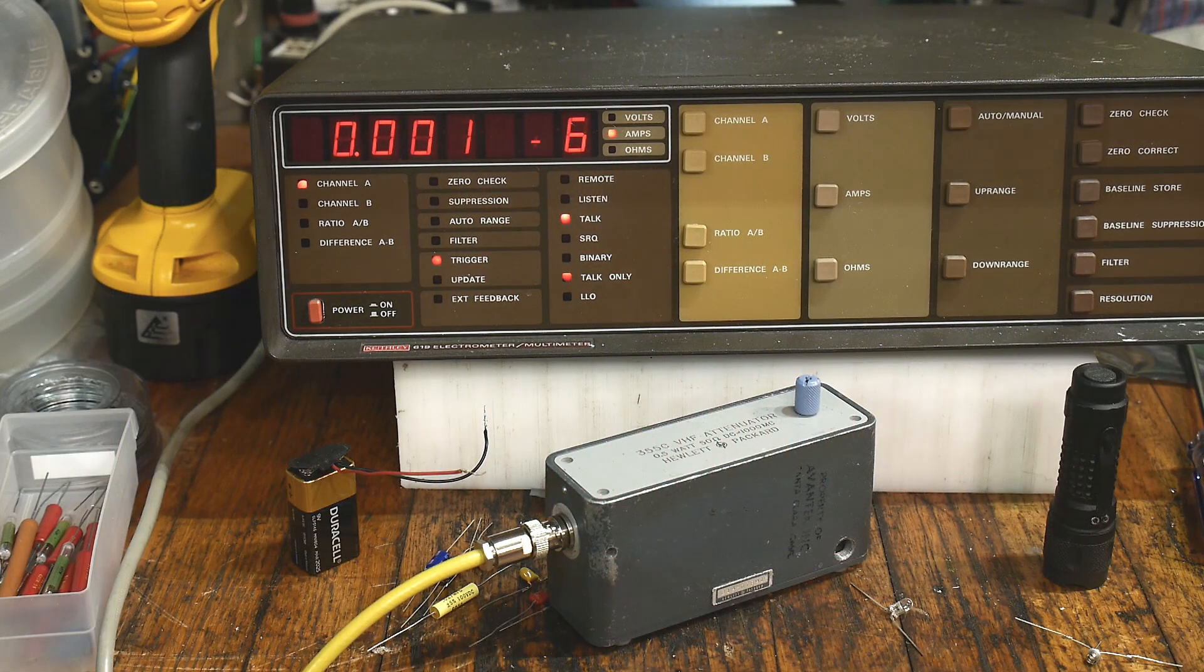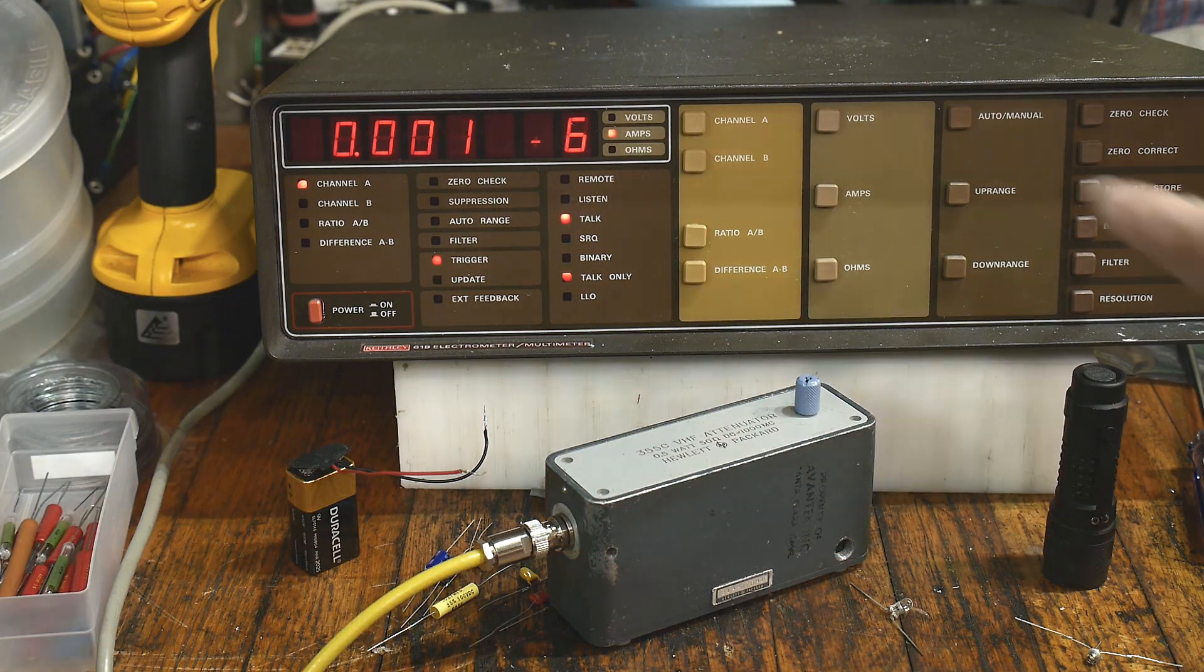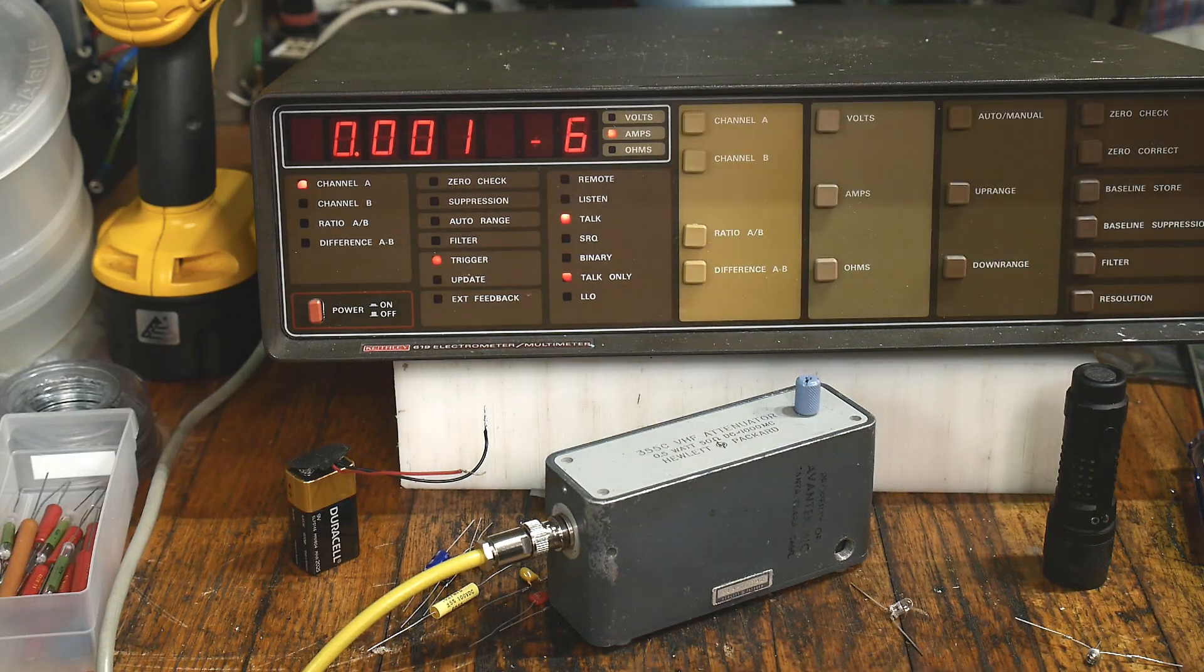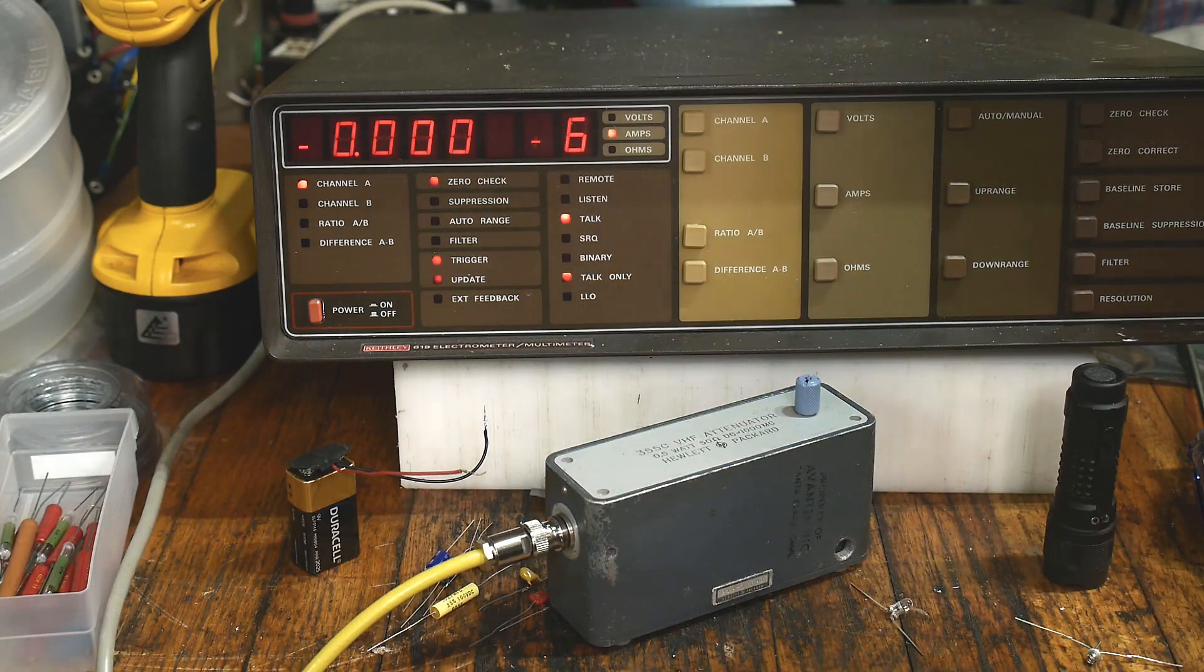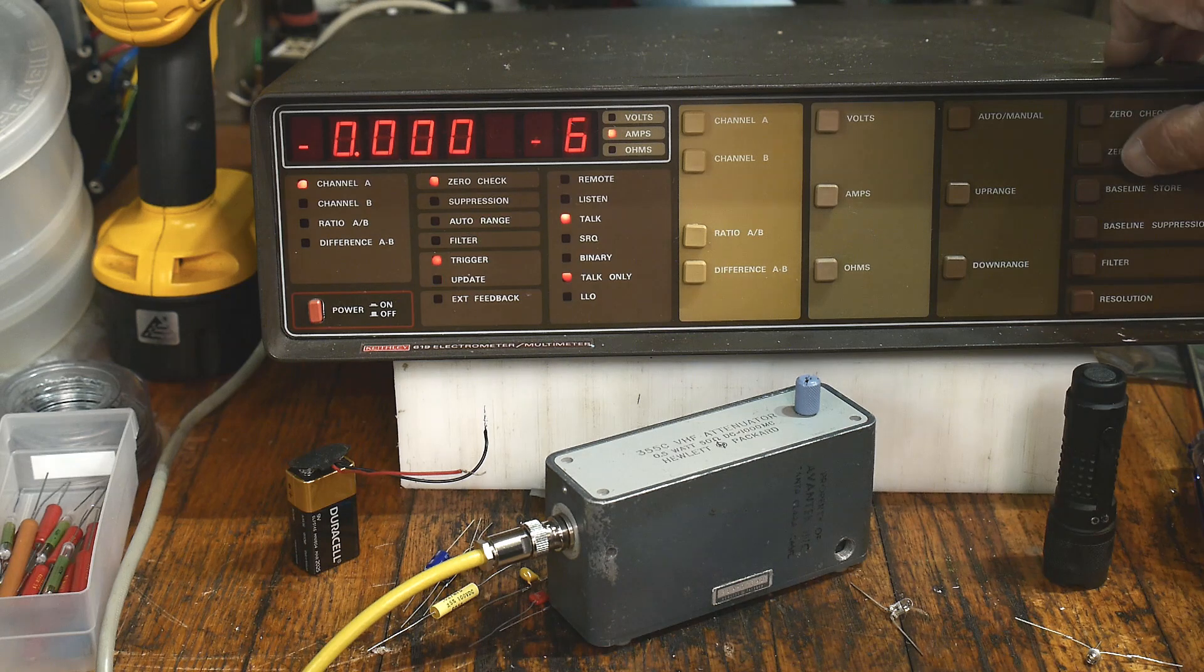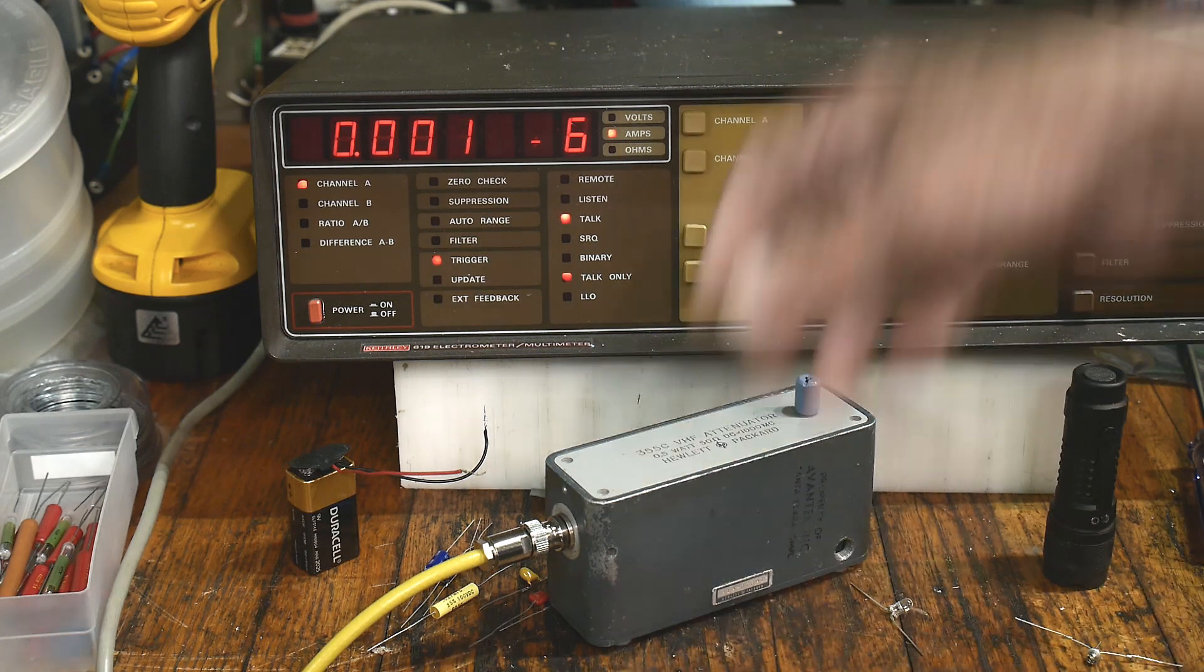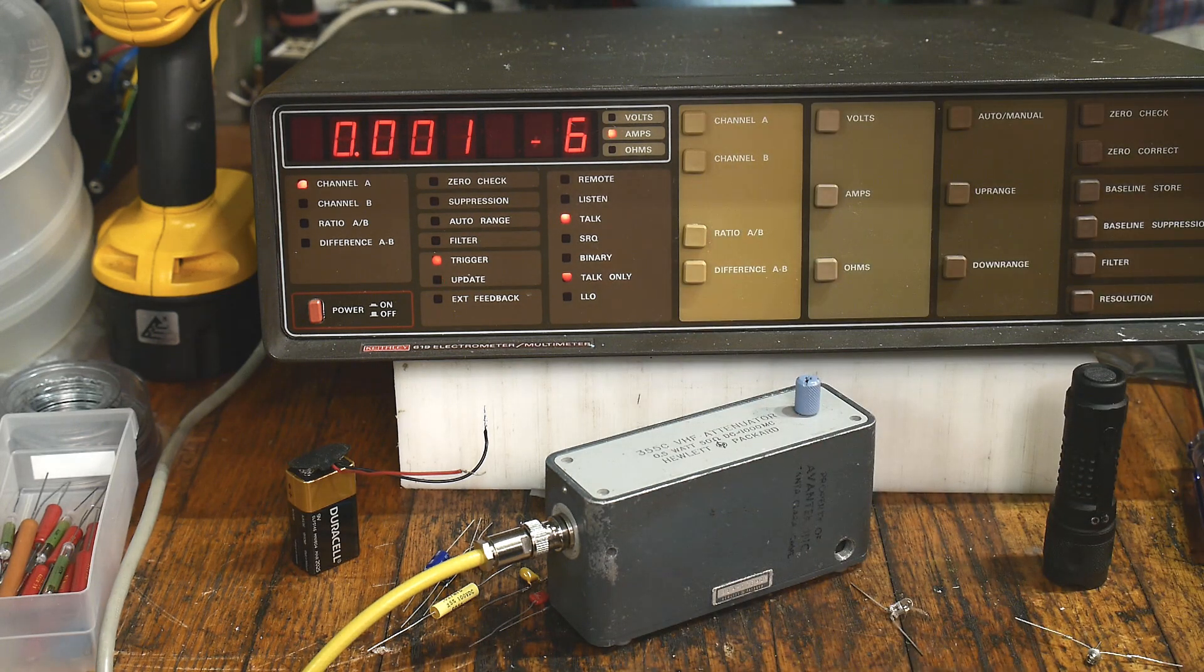Okay, we're going to be measuring amps today. So we're going to push the amps button and we're measuring micro amps. It's measuring a little bit there, so we can do a zero check. We can push the zero button. It says I got this zero, and so that's good. Turn off zero check.